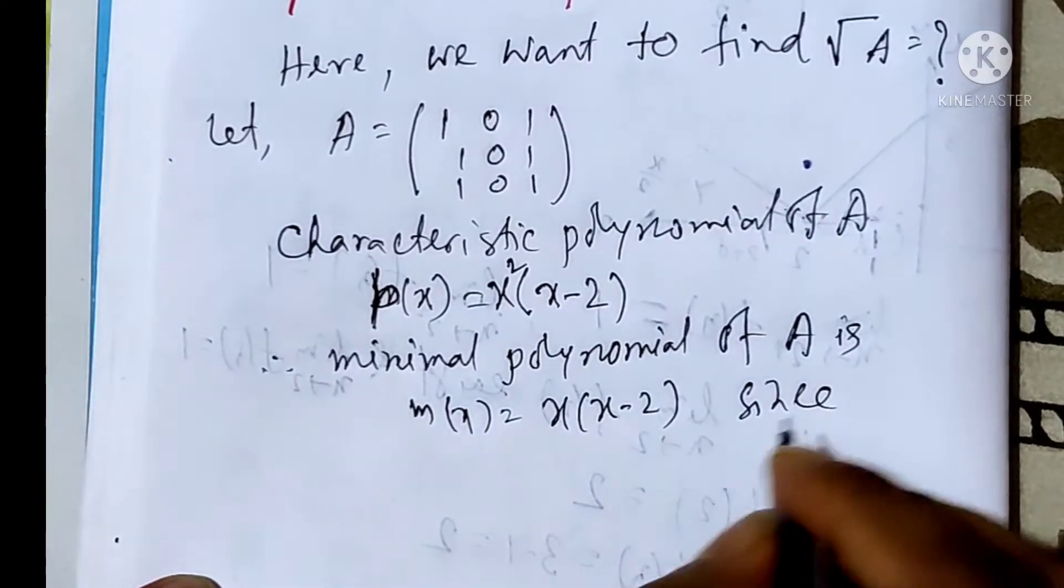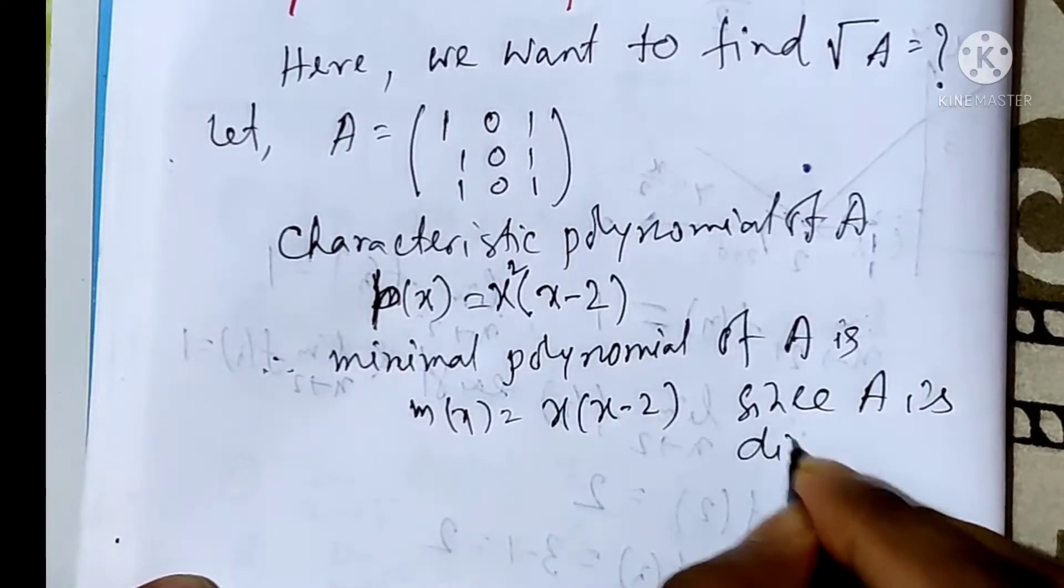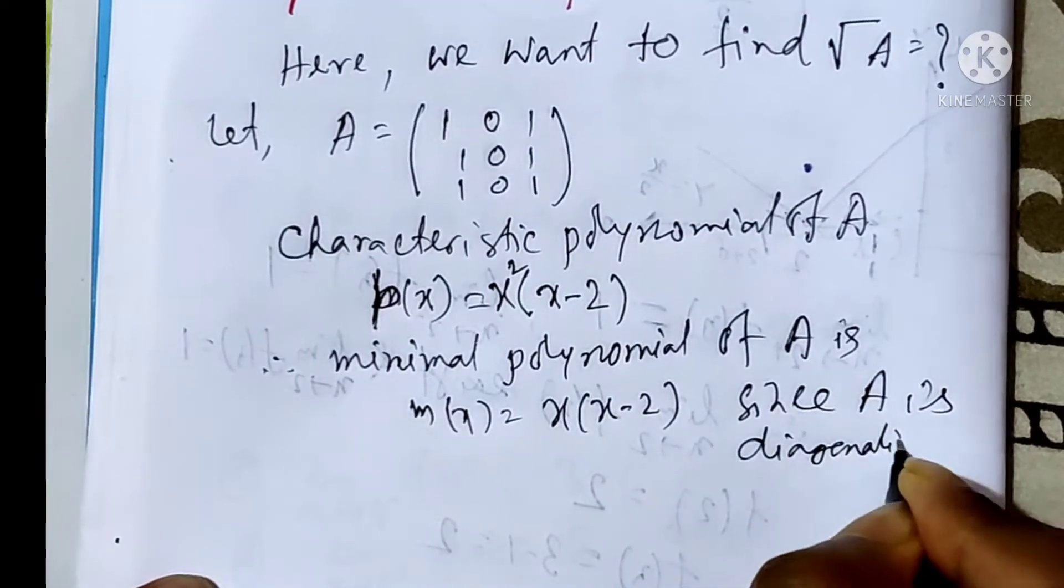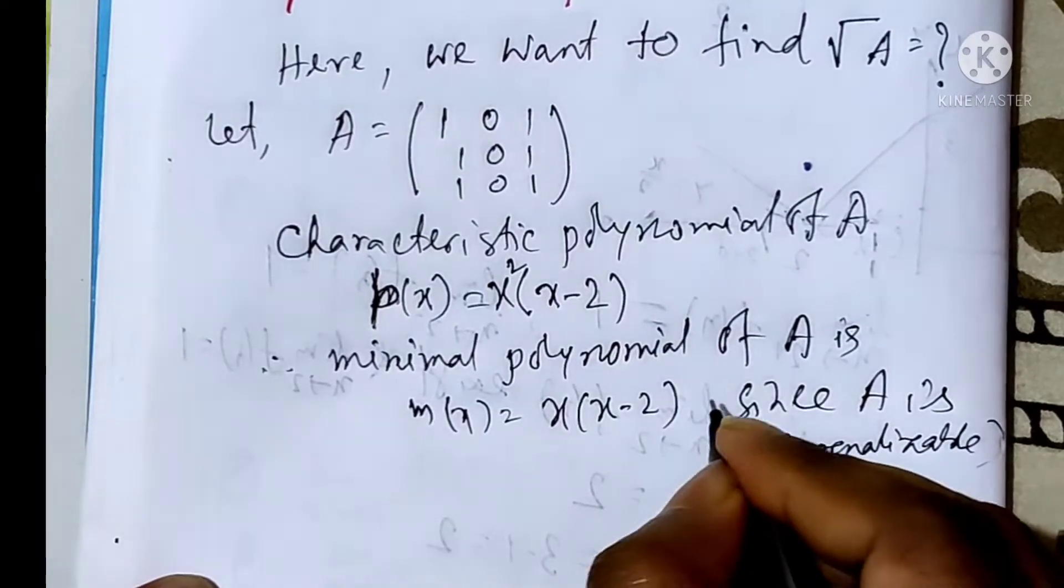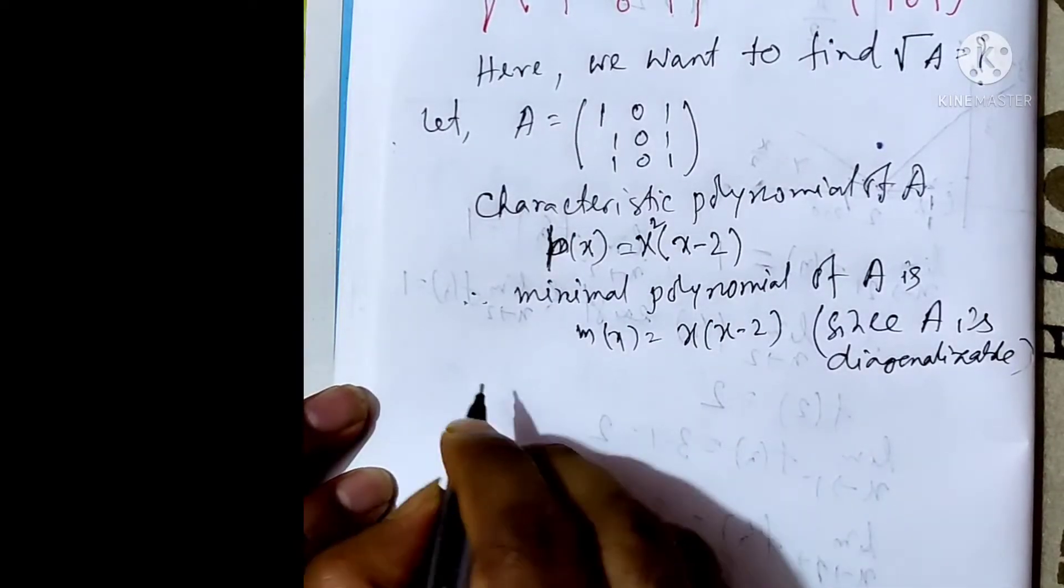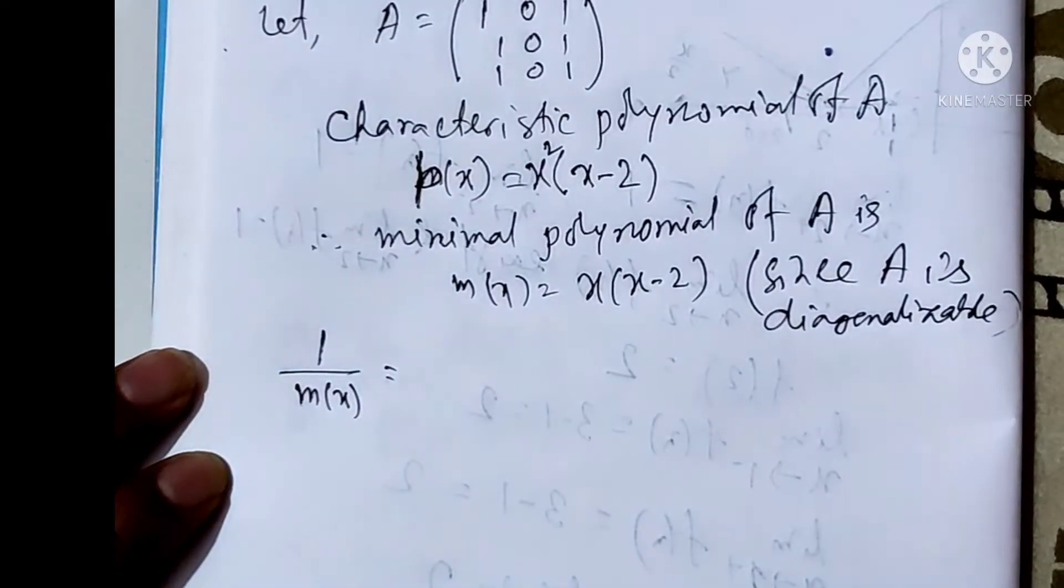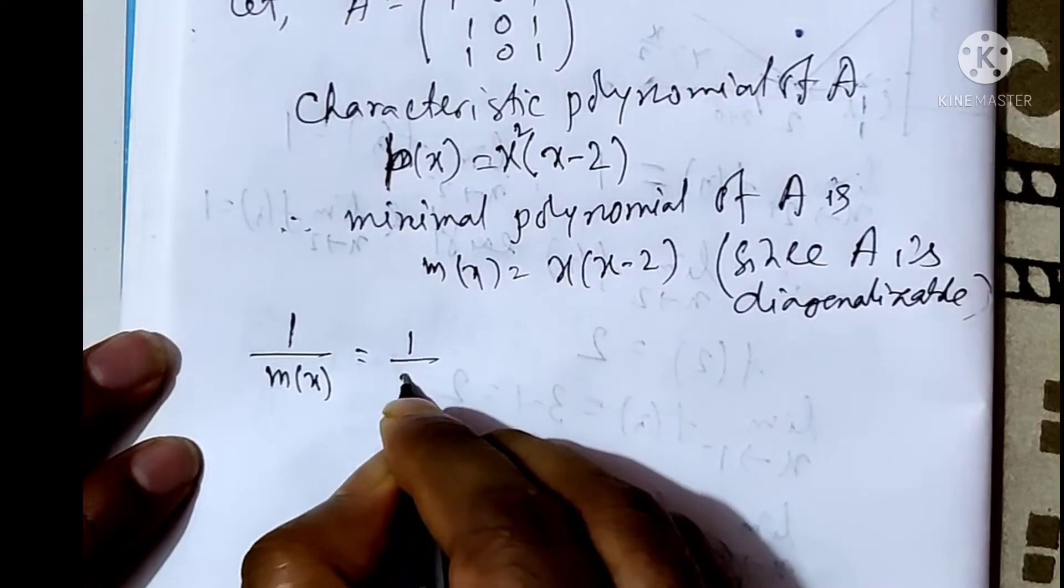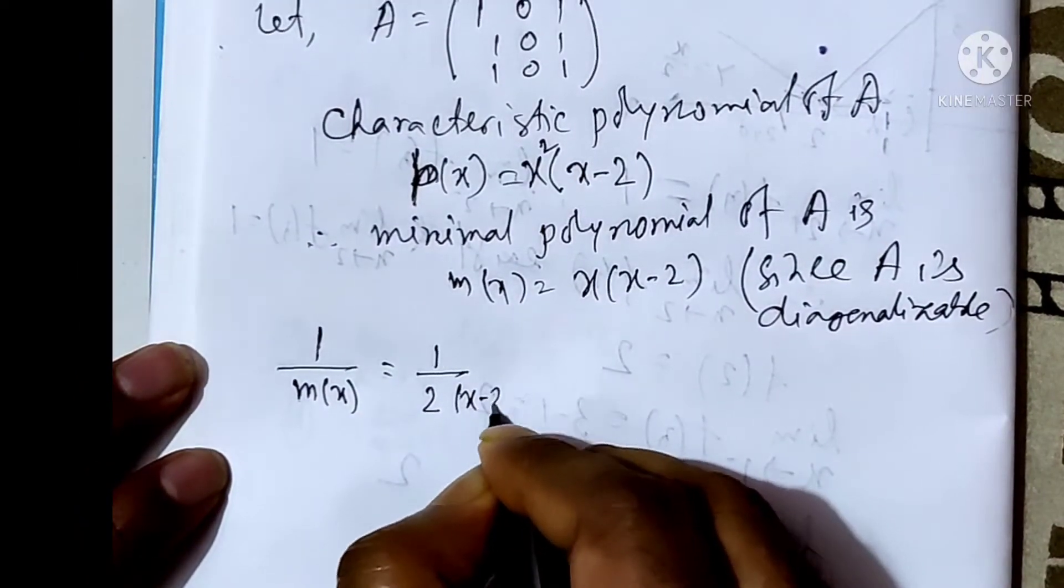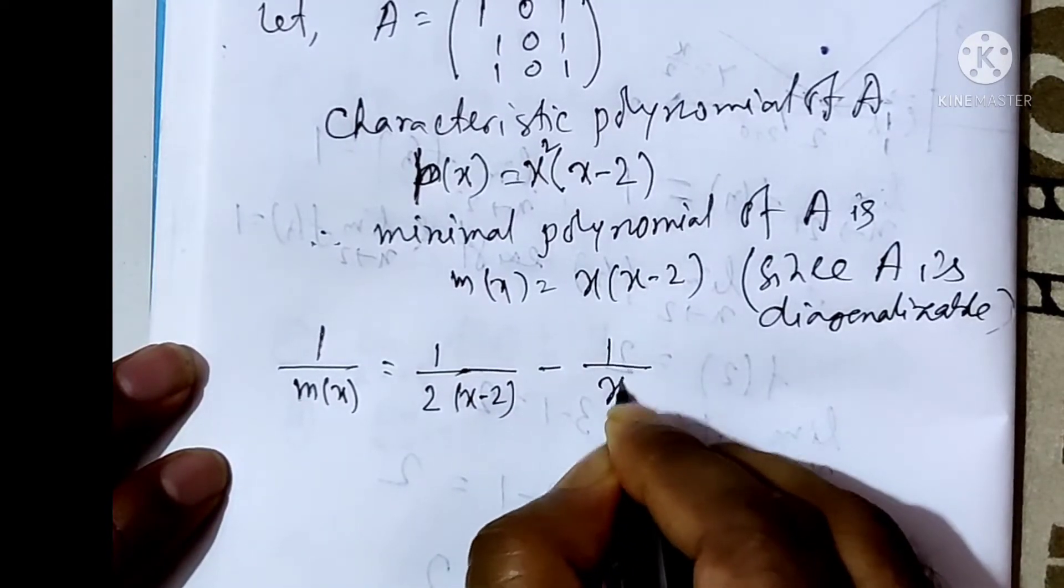Since A is diagonalizable, now write this m(x) in partial fraction. That way, m(x) equals 1 over 2(x minus 2) minus 1 over 2x.